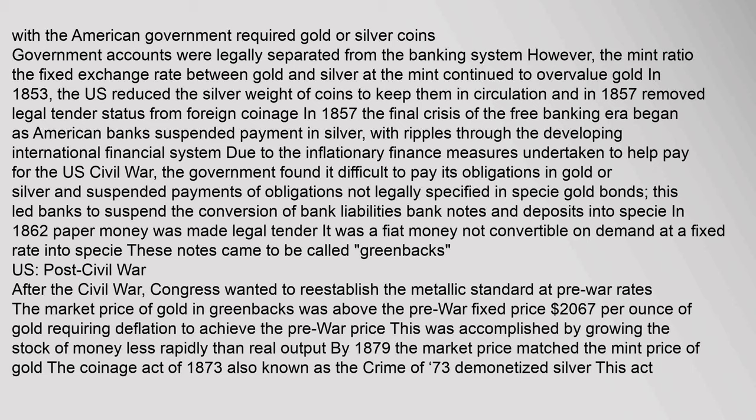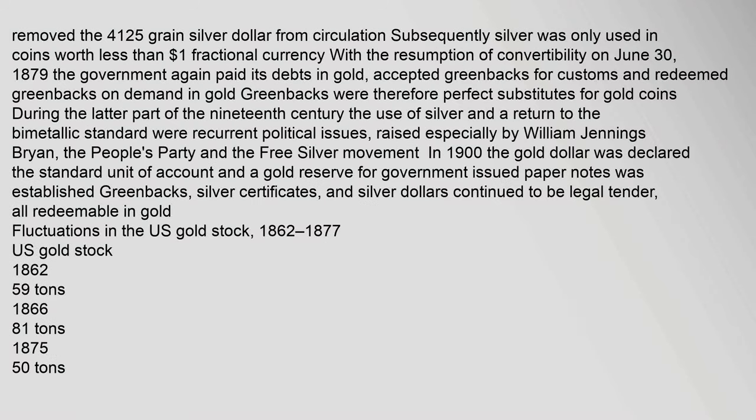After the Civil War, Congress wanted to reestablish the metallic standard at pre-war rates. The market price of gold in greenbacks was above the pre-war fixed price of $20.67 per ounce of gold, requiring deflation to achieve the pre-war price. This was accomplished by growing the stock of money less rapidly than real output. By 1879, the market price matched the mint price of gold. The Coinage Act of 1873, also known as the 'crime of '73,' demonetized silver, removing the silver dollar from circulation. With the resumption of convertibility on June 30, 1879, the government again paid its debts in gold and redeemed greenbacks on demand in gold.